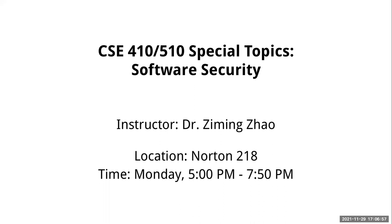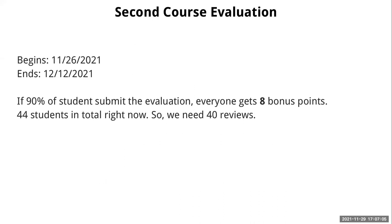This is our last lecture this semester, so almost there — last class, last topic. The second course evaluation is the same as the first one: 90% of you give reviews and everyone gets points. Right now we have 44 students, actually 45, but one had some homework issues. So we need a four-review threshold.